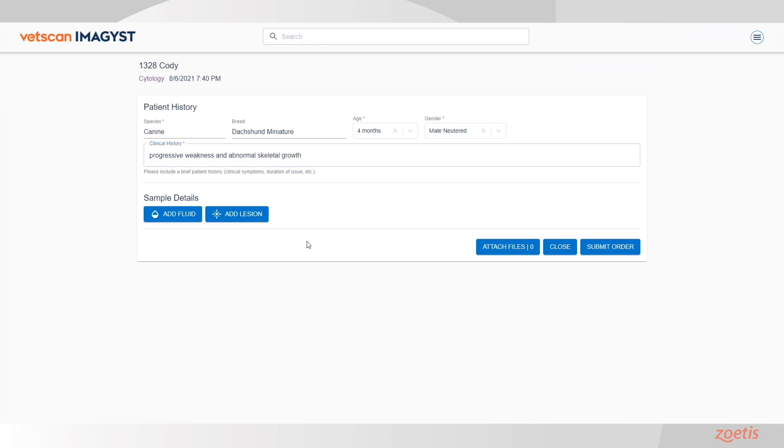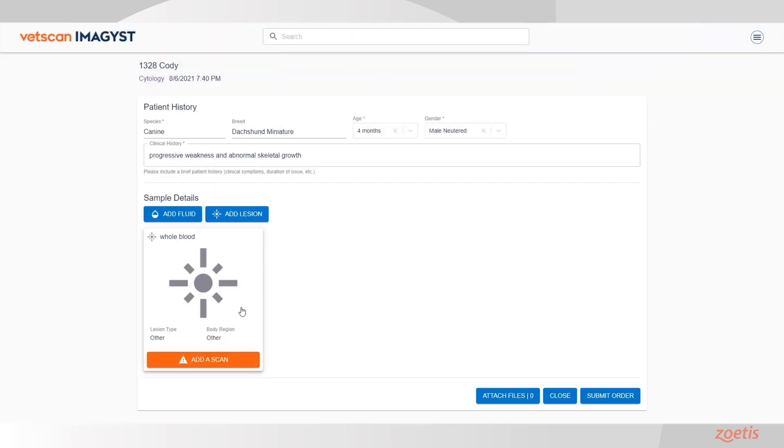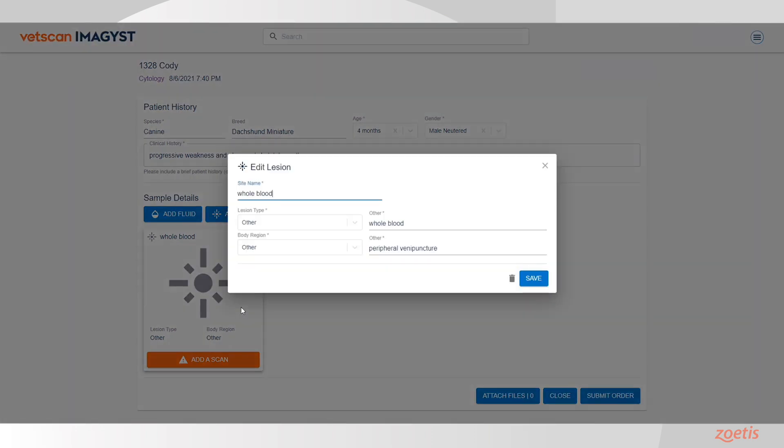Next, click on either Add Fluid or Add Lesion. Complete the required information and click on Create. You may create up to two different sites. Click on a sample card to open and edit a sample site.